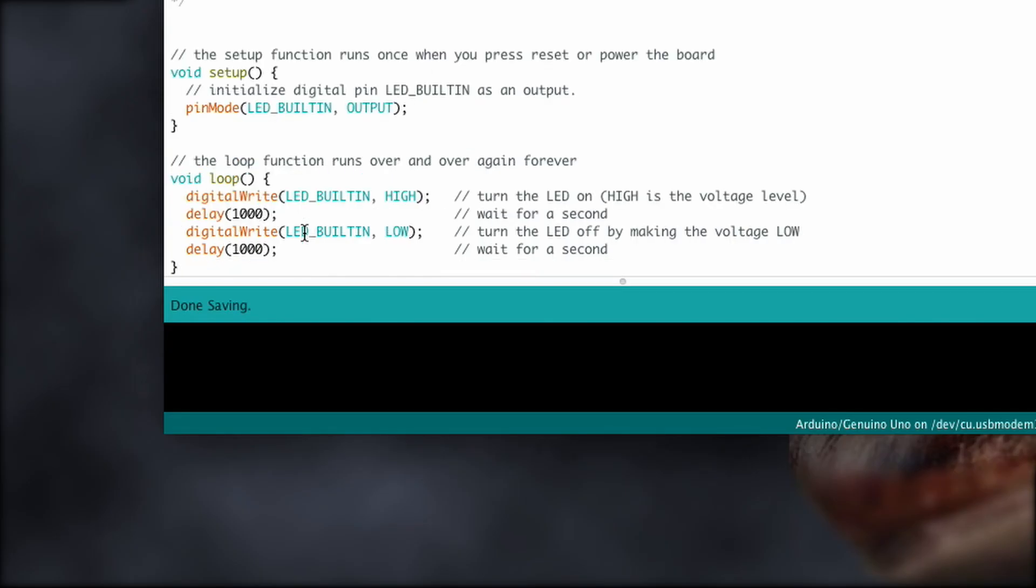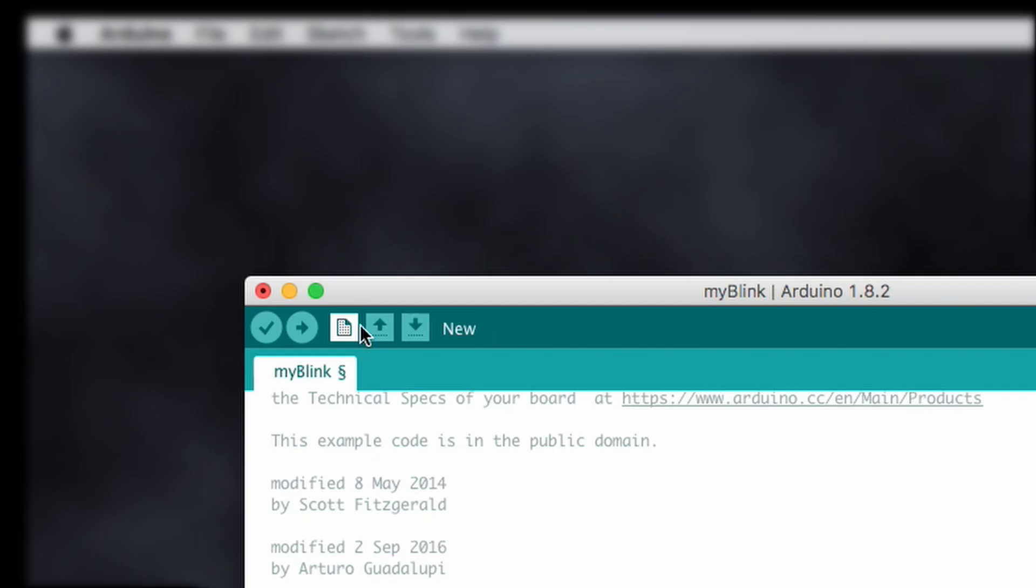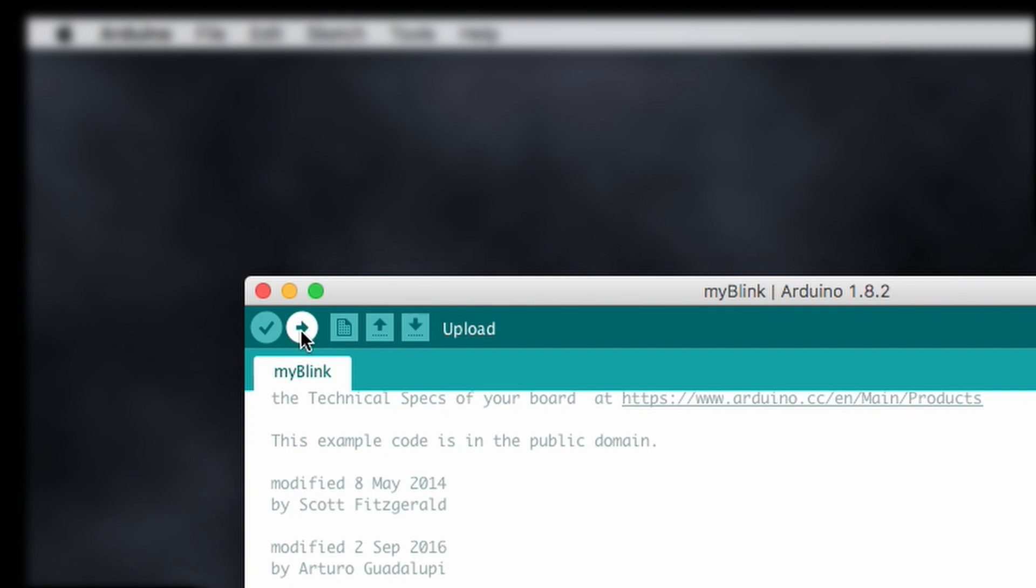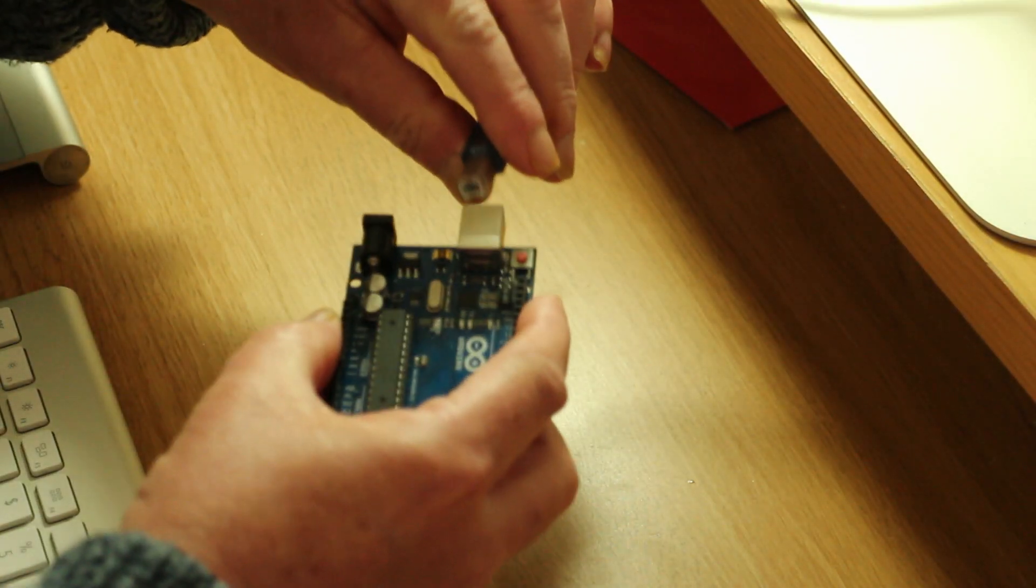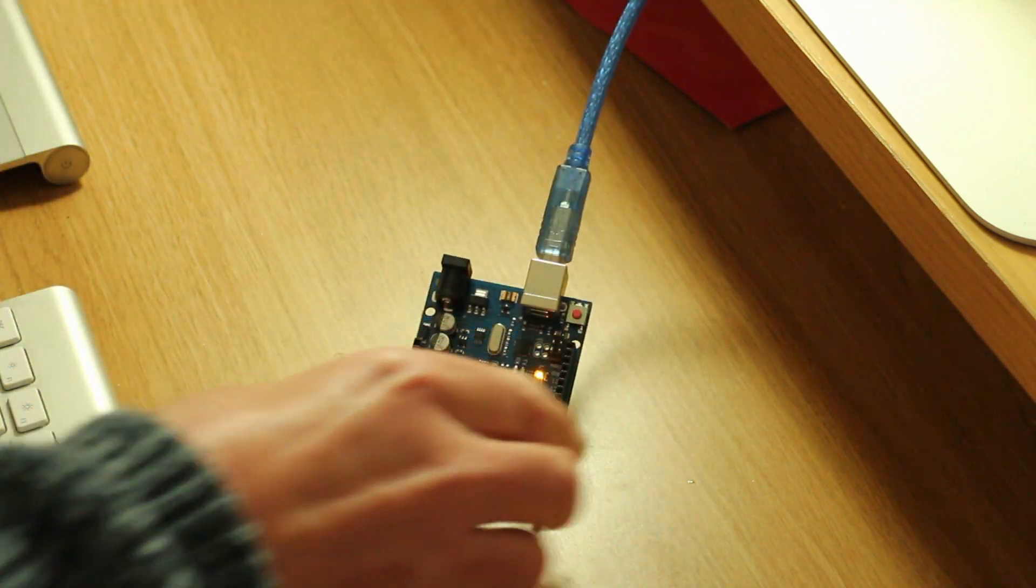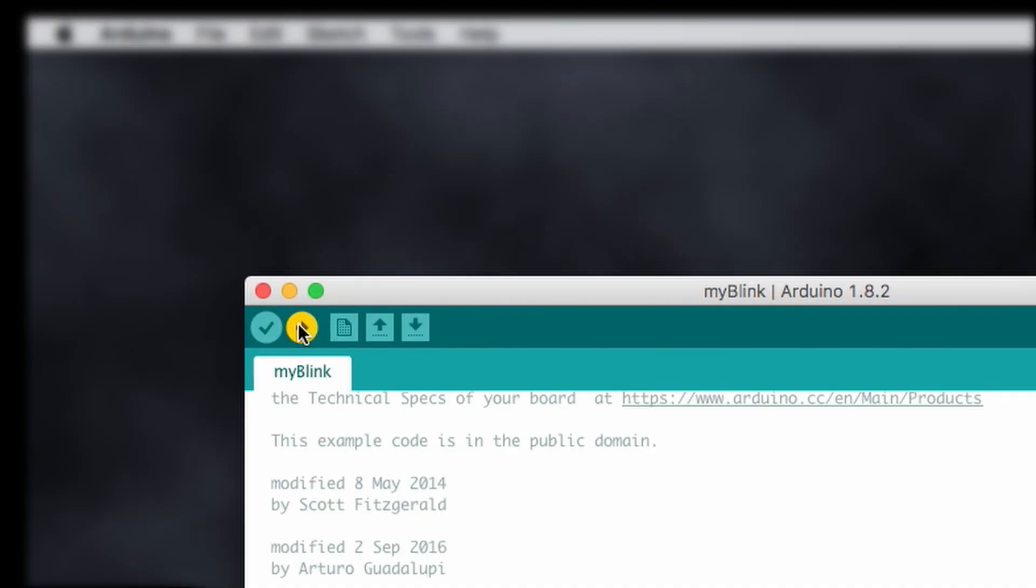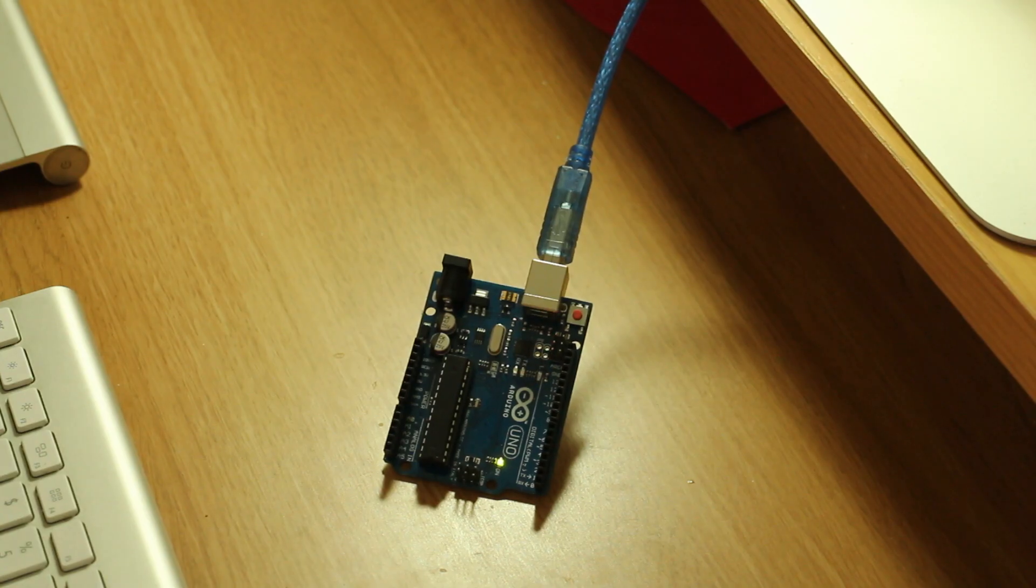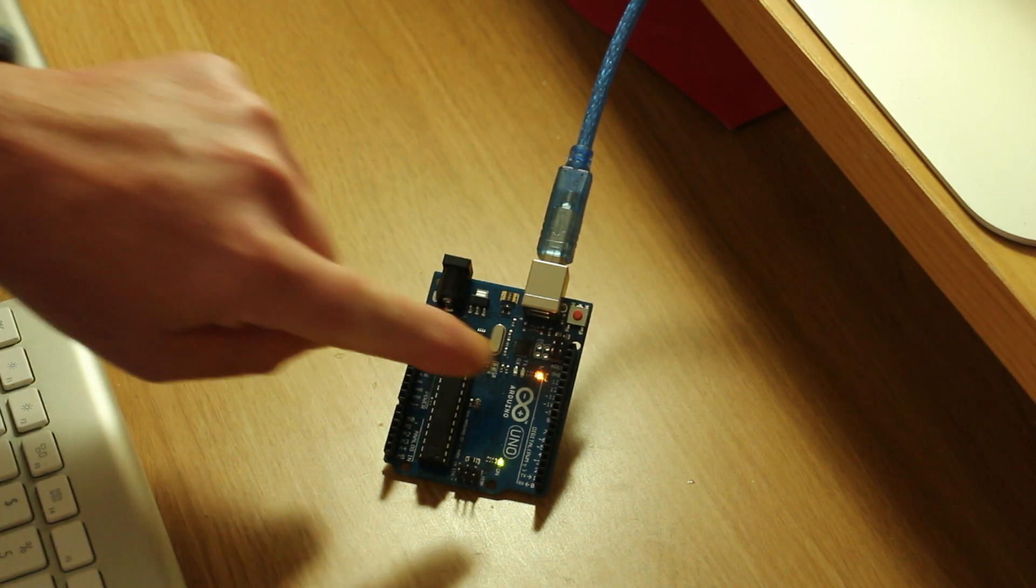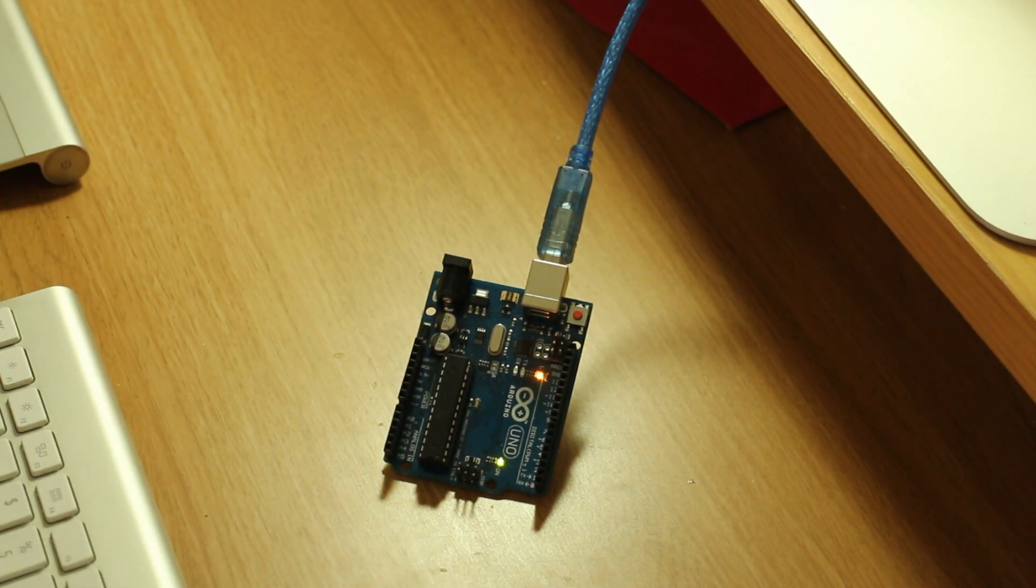Now I can change anything I want. So I'll change these 1000 milliseconds to 250, and save that and then plug in the Arduino and upload it. So there we go. It's done it. It's flashing on and off four times faster than before.